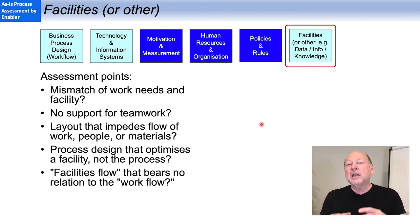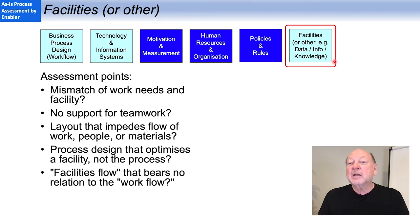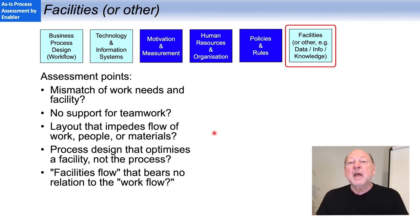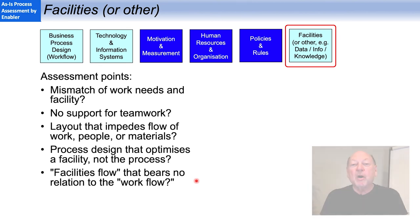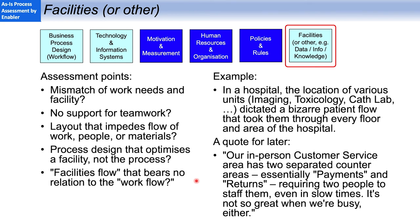Facilities covers the actual design and layout of the facility and its fixtures and furnishings. Many clients now use this enabler to look at data, information, and knowledge because so much work is done in virtual space. But if we are looking physically, one interesting area is whether the facilities flow — the flow of work through the facility — bears no resemblance to the natural flow of the work. One example was at a hospital where the locations of units like imaging, toxicology, and the cath lab dictated a bizarre patient flow that exposed patients to increased risk by taking them through virtually every floor and many areas in the hospital.